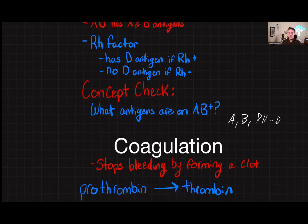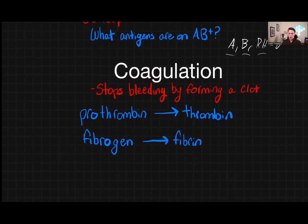Blood type is important because it determines a person's suitability as a donor or recipient in a blood transfusion. For example, someone with type A blood can only receive A or type O blood, while somebody with type AB blood could receive any blood type. Type O negative blood is considered the universal donor because it can give blood to anyone without a risk of transfusion reaction. On the other hand, type AB positive blood is considered the universal recipient, since it presents antigens for A, B, and Rh — meaning it can take any blood without causing an immune reaction, whereas type O negative will react to all other blood types.